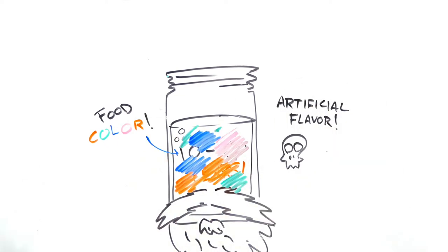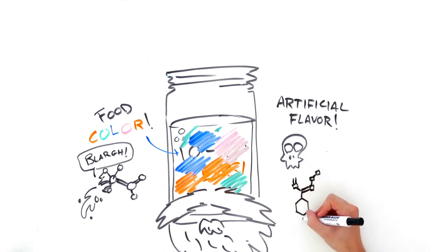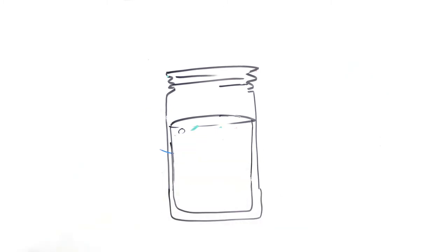The reason top shelf whiskey tastes better is because it's had a lot more time to penetrate deep into the walls of the barrel and absorb the rich flavors from the wood. Over time, the wood also filters out toxins like the hangover-causing acetaldehyde and methoxyphenoloxene, which is more commonly found in mice and pig shit. You really are getting what you paid for.